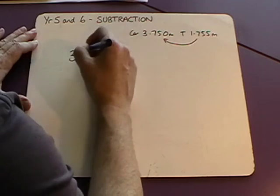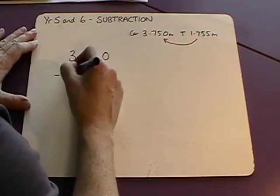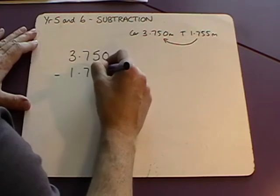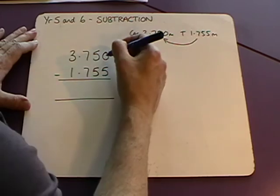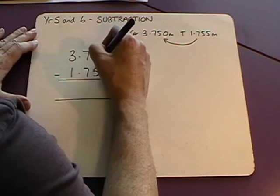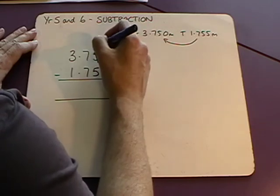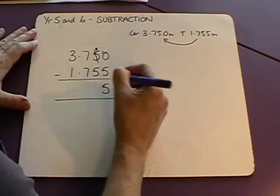So we're going to write three point seven five zero. Subtract one point seven five five. Zero subtract five. We're not able to do that. So we need to borrow from the hundredths column. That leaves us with four. And we can place our one there. Ten subtract five is five.